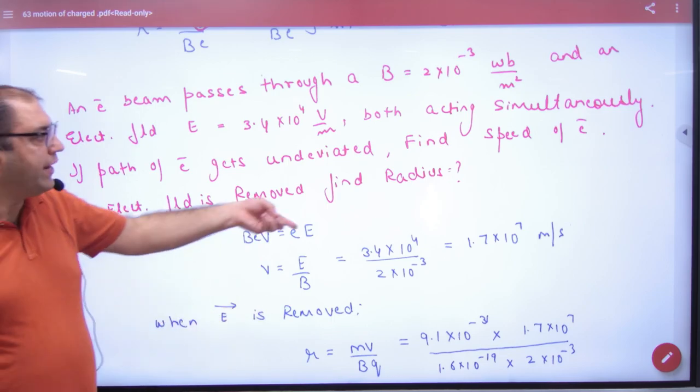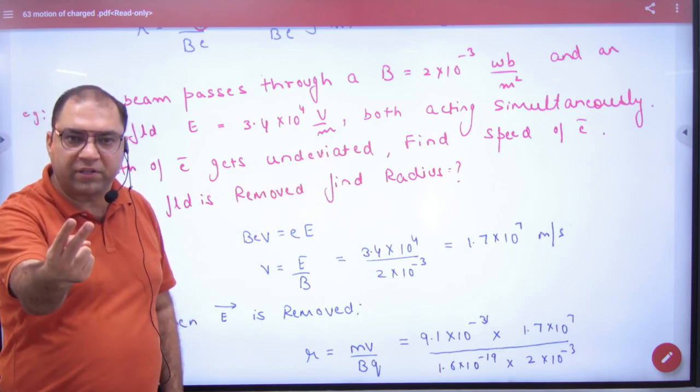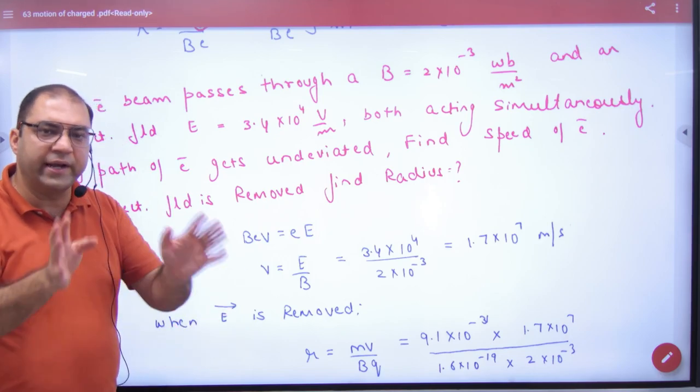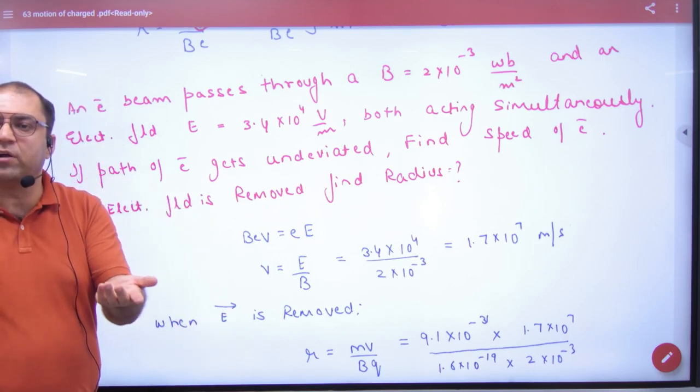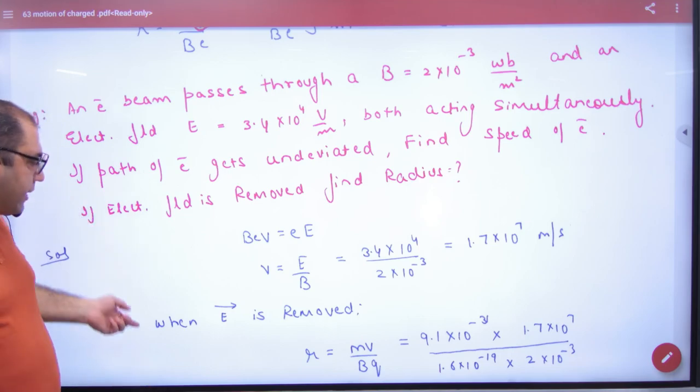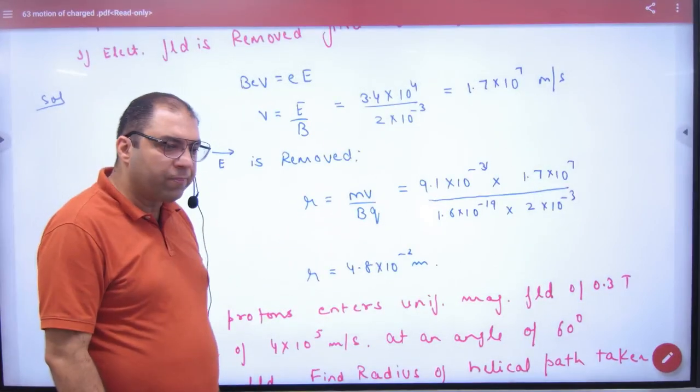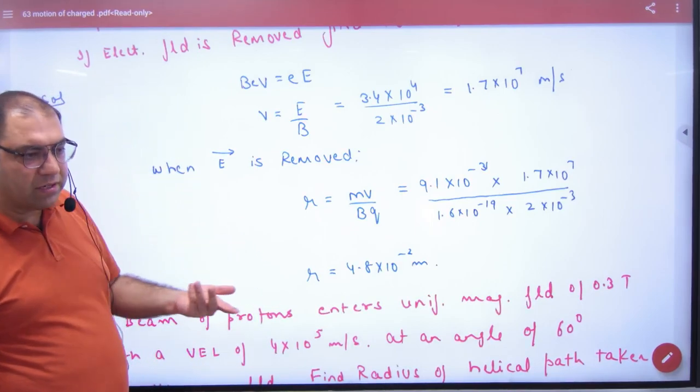Second part. In the second part I say speed of electron. If I have left electric field. Which field is only magnetic? Magnetic field. Radius formula, mv by bq.